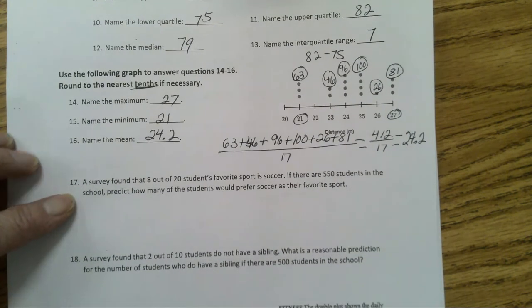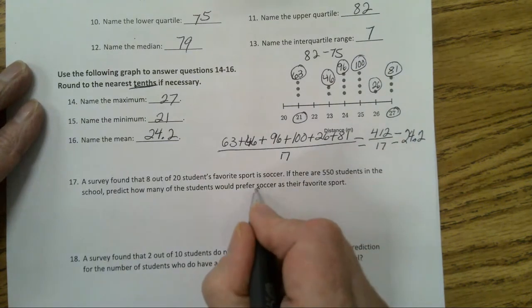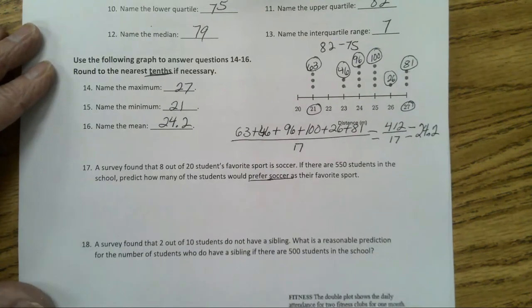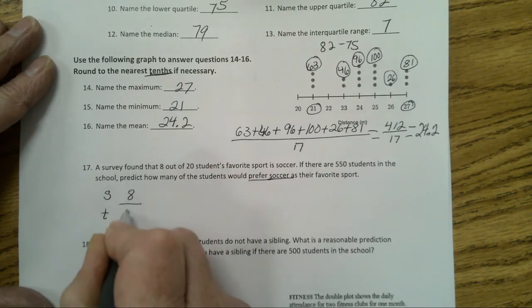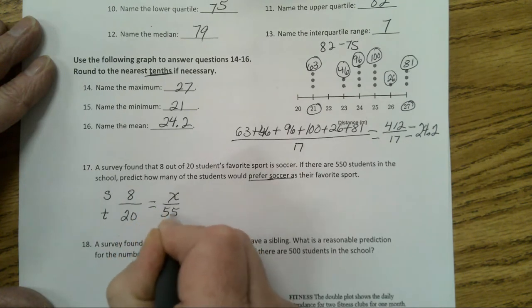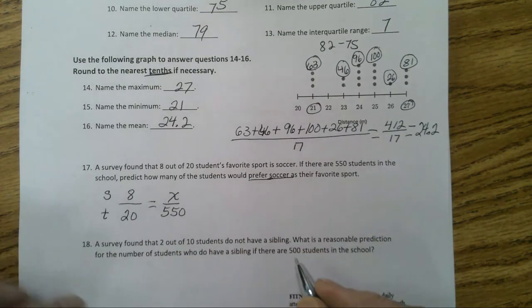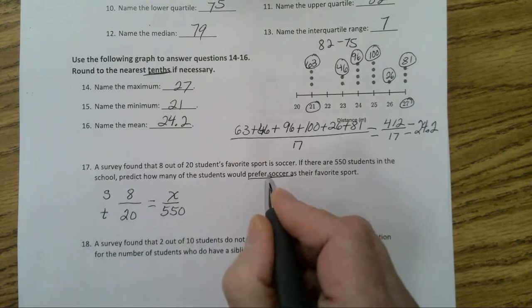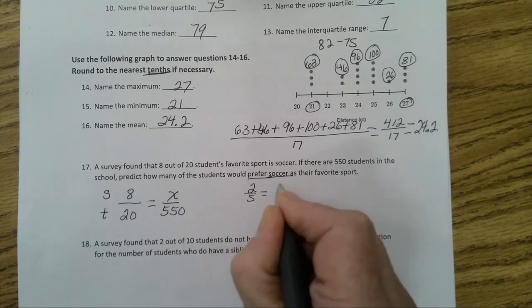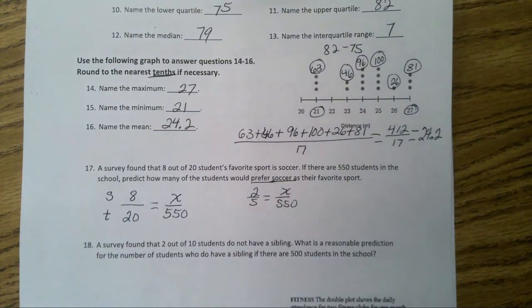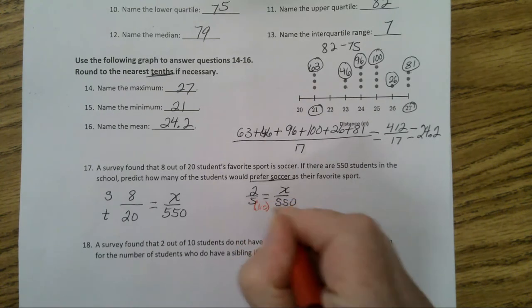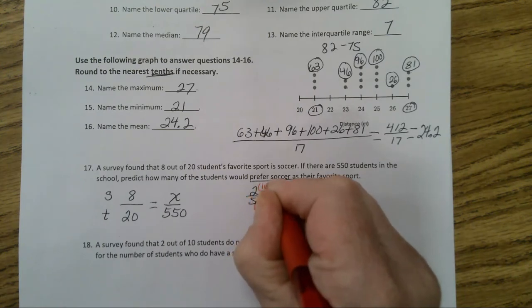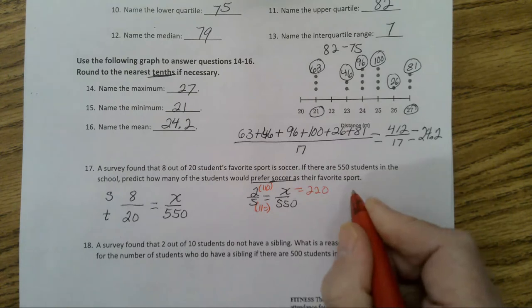Now let's go on to number 17. A survey found that 8 out of 20 students' favorite sport is soccer. If there are 550 students in the school, predict how many of the students would prefer soccer as their favorite sport. So it's soccer over total. 8 out of a total of 20 equals x over 550. Now I could simplify this fraction to make it even a little easier. 8/20 will simplify to the fraction 2/5 equals x over 550. Now when I do that, I see, oh, 5 times 110 equals 550, and 2 times 110 will give you 220. So the answer would be 220 students.